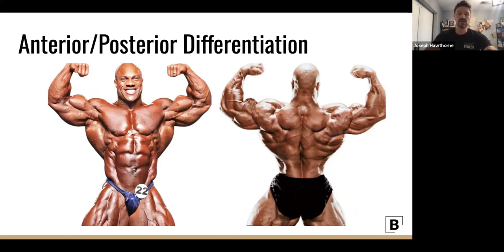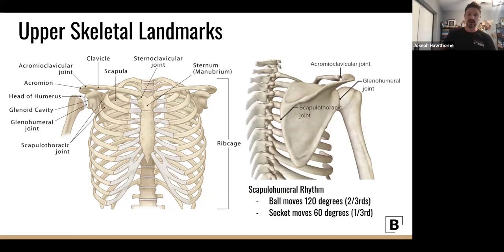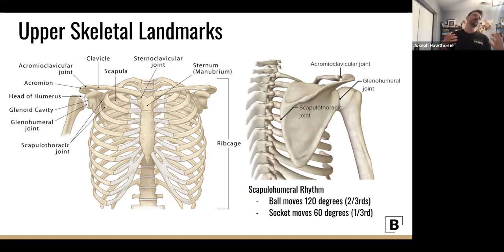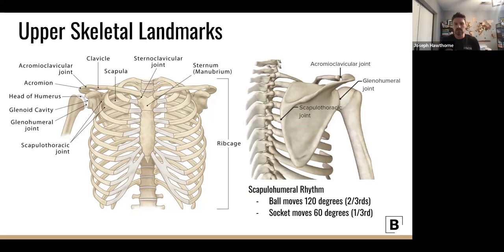Let's go through bony landmarks. The most easily found is the sternoclavicular joint — the SC joint — the two little nodules where the sternum meets the clavicle. It's one of the strongest joints in the entire human body. It's very rigid and stiff because we need an anchor point that allows the ribs to move for breathing and the shoulder to move, while this joint itself stays solid.